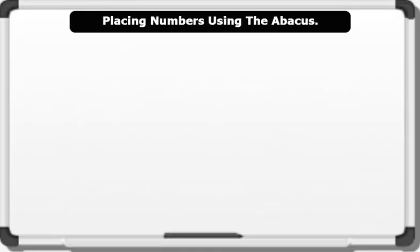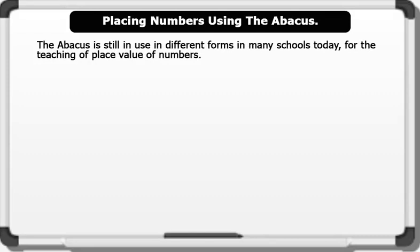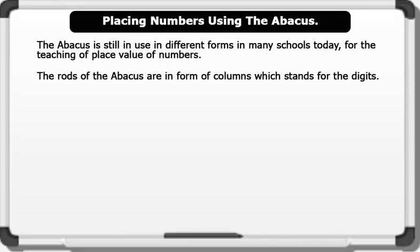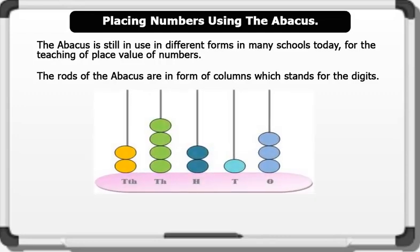Placing Numbers Using the Abacus. The abacus is still in use in different forms in many schools today for the teaching of place value of numbers. The rods of the abacus are in the form of columns, which stand for the digits. For example, the abacus below shows a 5-digit number placed in their various columns.